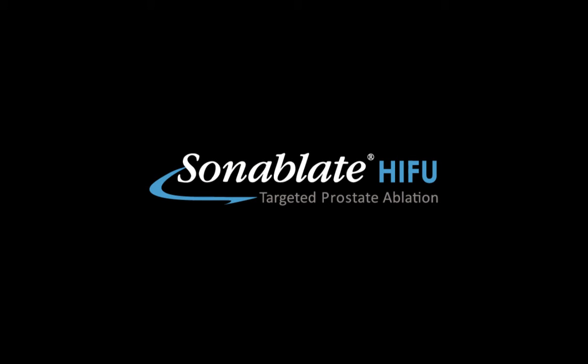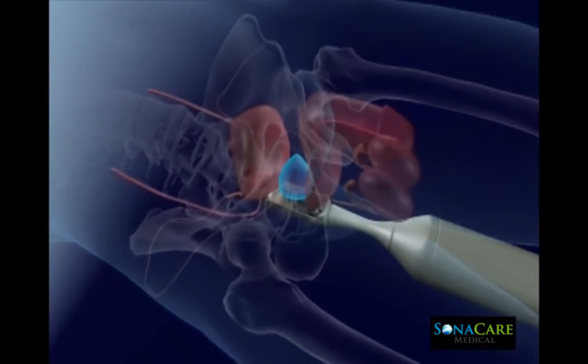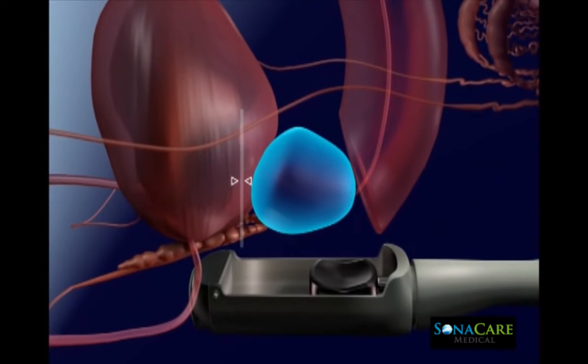The Sonoblate system is a physician-guided robotic device that is FDA cleared for transrectal high intensity focused ultrasound ablation of prostatic tissue. High-intensity focused ultrasound or HIFU is delivered via a transrectal probe that is securely positioned in the appropriate anatomical orientation at the beginning of the procedure.